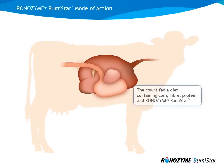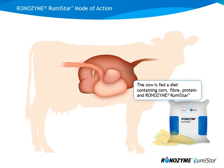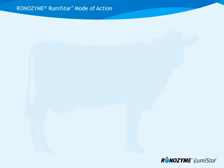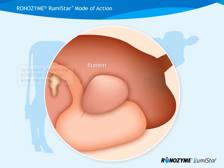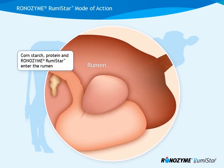The cow is fed a diet containing corn, fiber, protein, and Ronozyme Rumistar. Cornstarch, protein, and Ronozyme Rumistar enter the rumen.